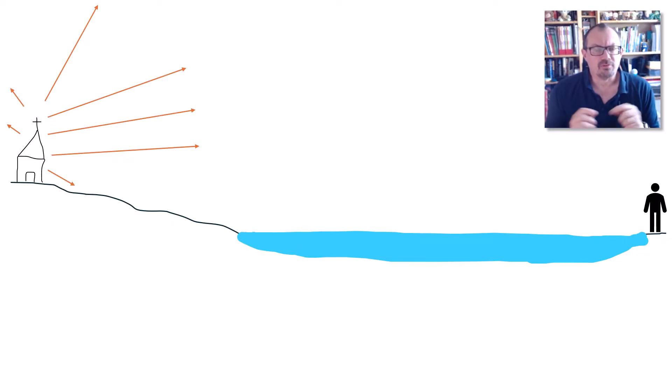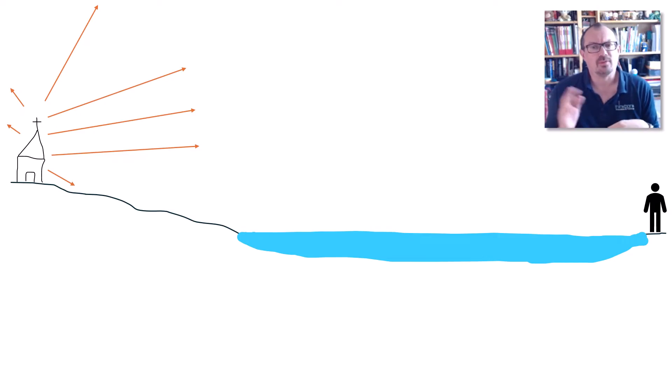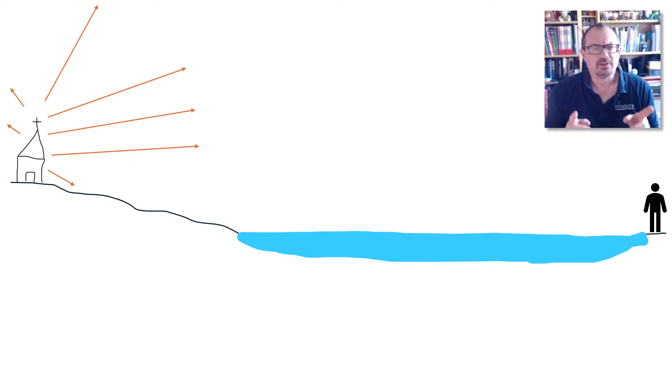Now light from the church will be radiating out in all directions. Some will hit the ground, some will travel away from the lake and the viewer, some goes off into the sky. But for this explanation let's just look at one beam of light.